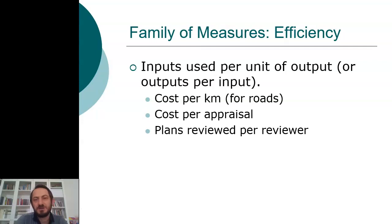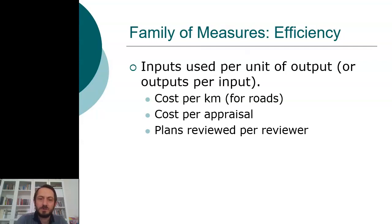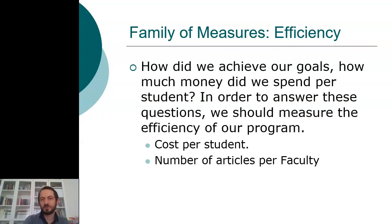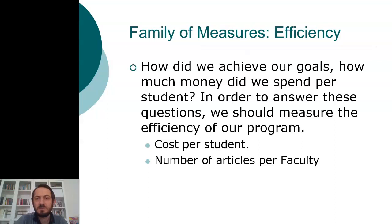The second measure is efficiency. It is the inputs used per unit of output, or outputs per input — both can be used. For example, cost per kilometer, cost per appraisal, plans reviewed per reviewer. For a university, for example, cost per student, or the number of articles per faculty member. Those are related to the measures of efficiency.